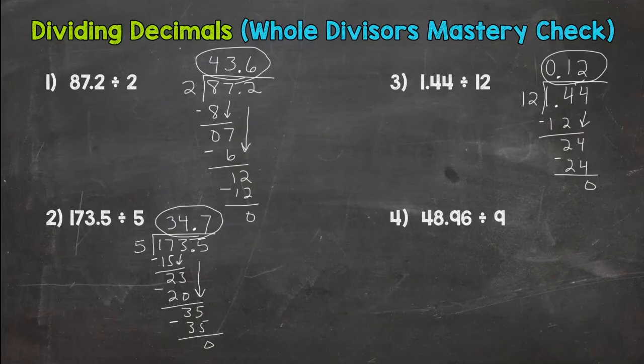And then let's wrap it up here with number four. 48 and 96 hundredths as our dividend and nine as our divisor. Is our divisor whole? Yep. So bring that decimal straight up.